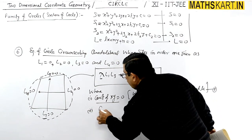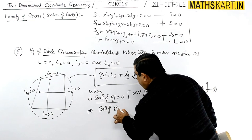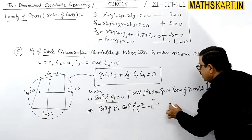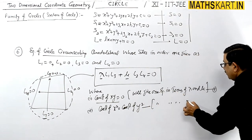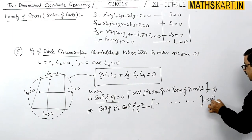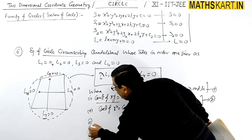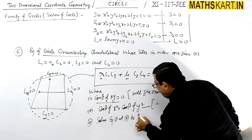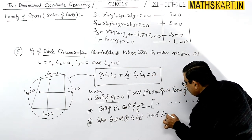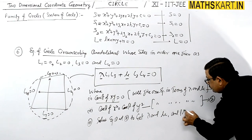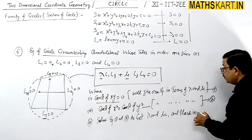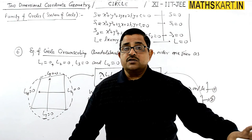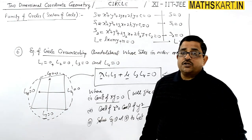The second condition: put coefficient of x² equal to coefficient of y². That gives the second equation in λ and μ. Solve equations one and two to get λ and μ, then place those values back in the equation to get the required circle. It is very easy and very fast — this is the short trick.